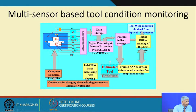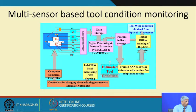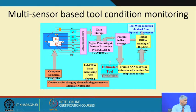The idea behind this is: why are we doing tool condition monitoring? Because if the tool's condition is very blunt — not sharp — I may be damaging the tool or the work piece. My product quality is going to deteriorate.